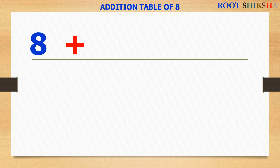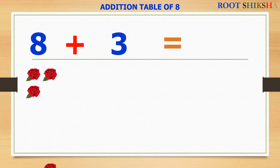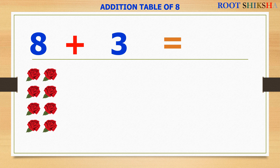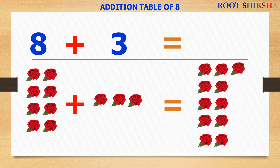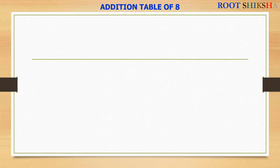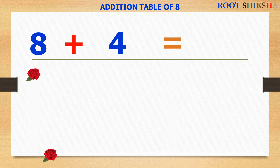8 plus 3 equals to — count with me: 1, 2, 3, 4, 5, 6, 7, 8. 8 roses plus 1, 2, 3 roses equals to — count with me: 1, 2, 3, 4, 5, 6, 7, 8, 9, 10, 11. 8 plus 3 equals to 11. 8 plus 4 equals to 12.